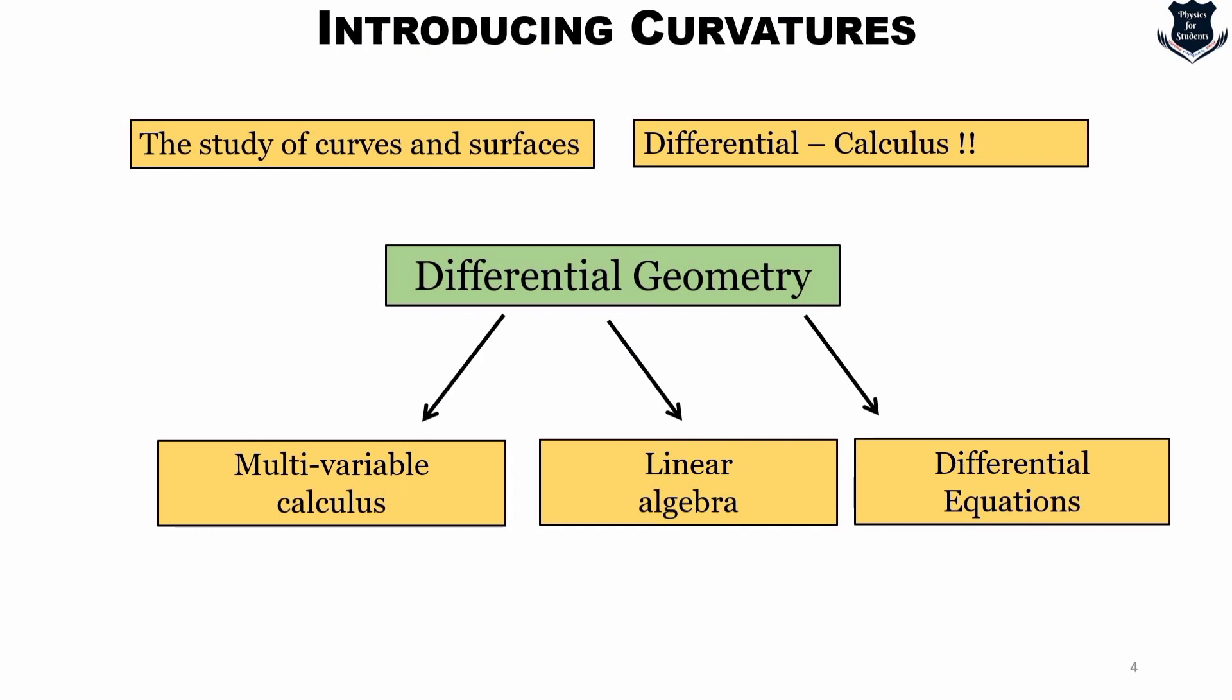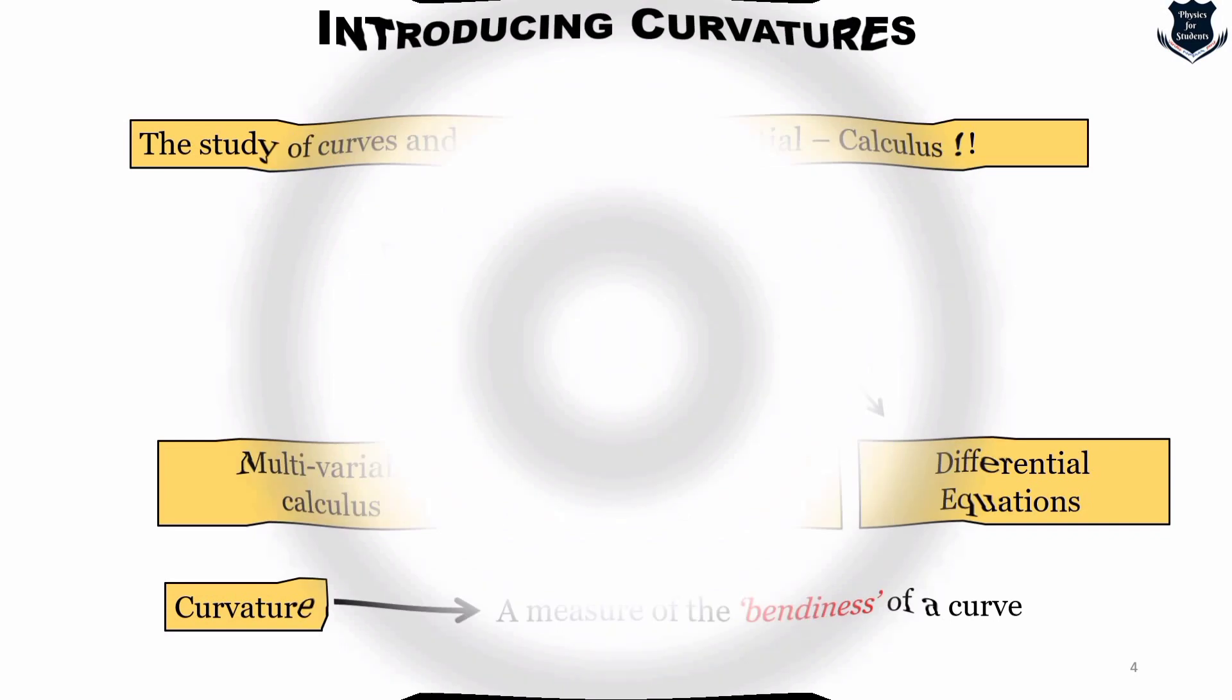So we have defined the three essential parts of differential geometry. Now curvature is basically a measure of the bendness of the curve. That means how much the curve is bending. Let us see some elementary examples. Now of particular interest is the notion of curvature. So for curves this will turn to be fairly simple. Curvature is as I told you basically the bendness of a curve.